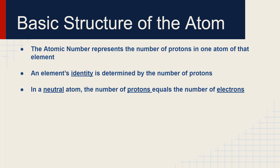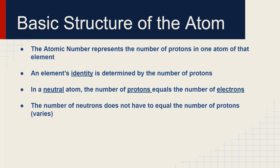If you have an atom that is neutral — electrically neutral — that means the number of protons and the number of electrons are the same. You have the same number of positive charges as negative charges; they cancel each other out, no charge. If those two things are not equal, then you have something called an ion. The number of neutrons does not have to be the same as the number of protons. Sometimes, especially in lighter elements, the numbers are the same, but they don't have to be. The number of neutrons can vary depending on what element you're talking about.